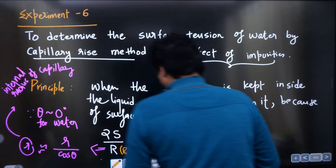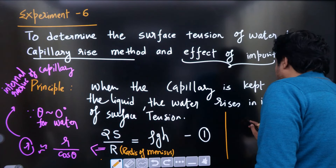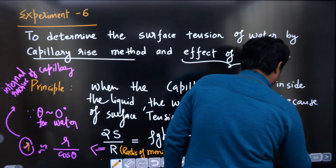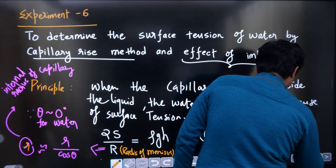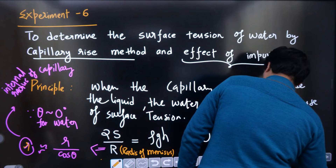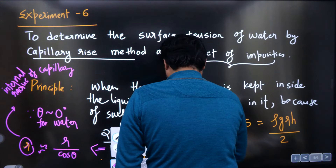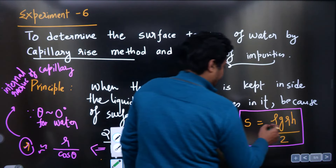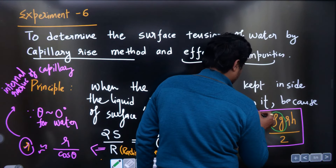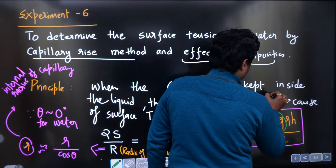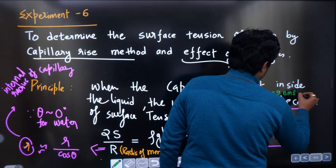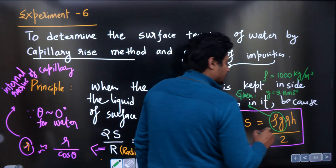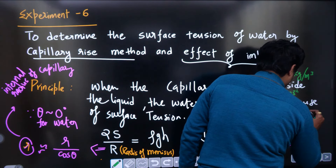Since capital R and small r are taken as the same, we can rewrite the surface tension formula as: S = ρgrh / 2. The acceleration due to gravity g = 9.8 m/s² and the density of water ρ = 1000 kg/m³ are given. The values of r and h must be measured experimentally.